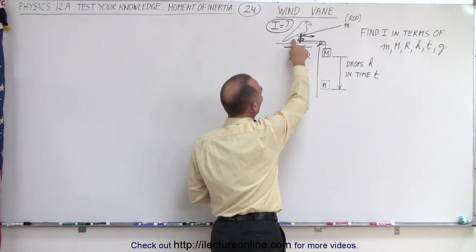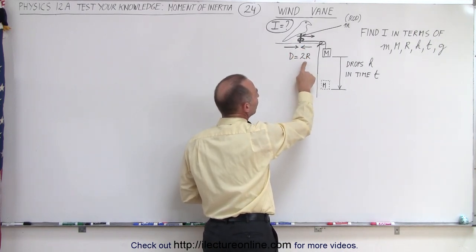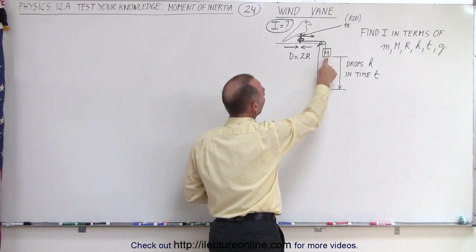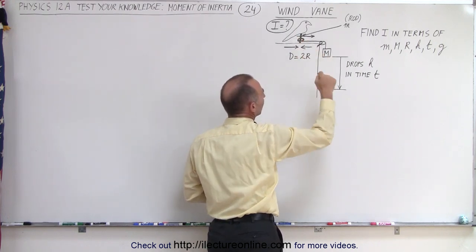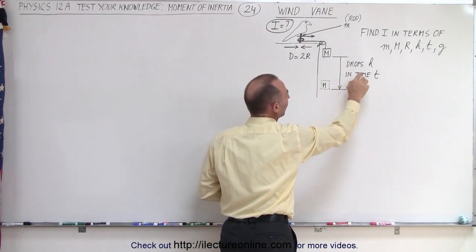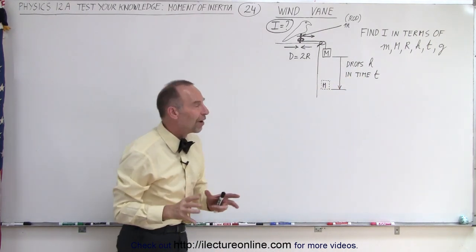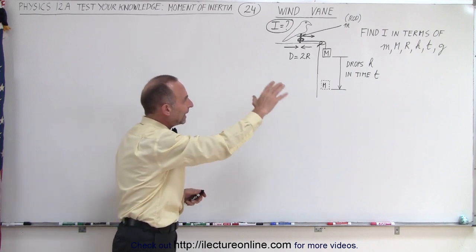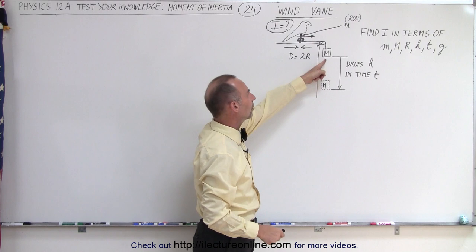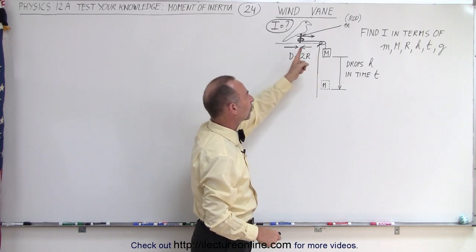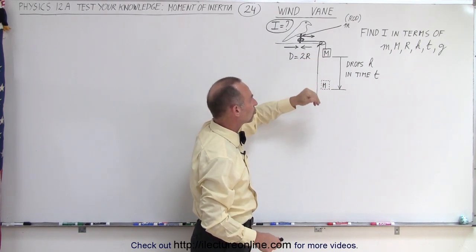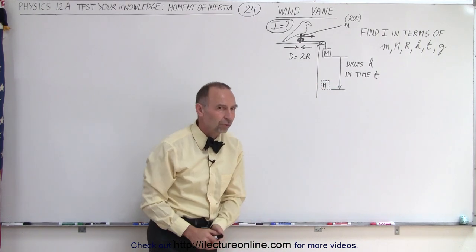So knowing the mass of the rod, the diameter of the rod (two times the radius), the mass of the block, the height that it drops in time t — from all that we should be able to find the moment of inertia. The variables are: small mass of the rod, big mass of the hanging weight, radius of the rod, height through which it drops, time it took to drop, and acceleration due to gravity.